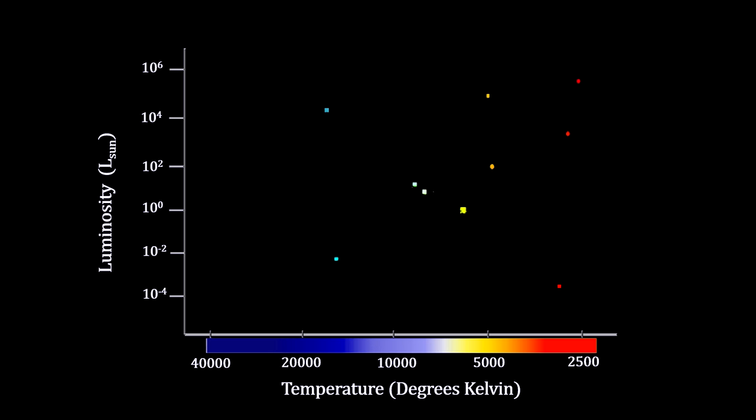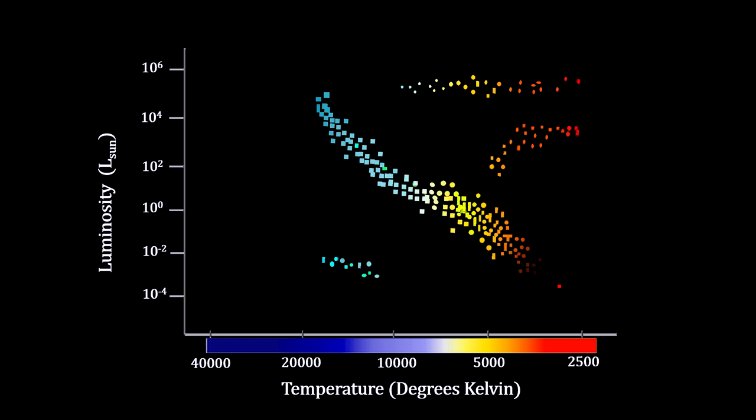With this small sample, it looks like any combination of temperature and luminosity is possible. But Hertzsprung and Russell meticulously plotted all the stars with known distance and luminosities. And they got this.